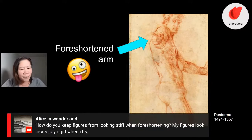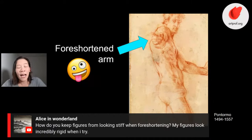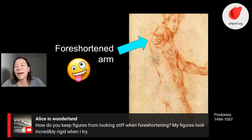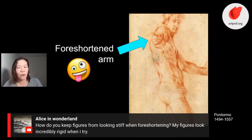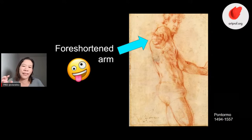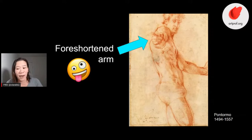Alice in Wonderland is asking: how do you keep figures from looking stiff when foreshortening? My figures look incredibly rigid when I try. I'd have to look at your drawing to give you an accurate answer. But I suspect that part of it is that you probably are not overlapping the forms. That is a basic approach I'm going to go over later. Foreshortening looks weird, but there is a logic to the way it's structured, and I'm going to break that down so it makes a little bit more sense.